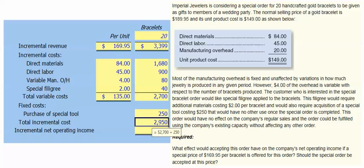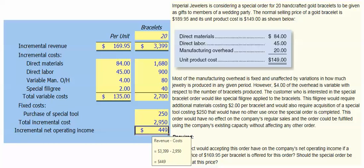Since we generated $3,399 in revenue, our incremental net operating income is the difference, which is $449. We should accept the special order.